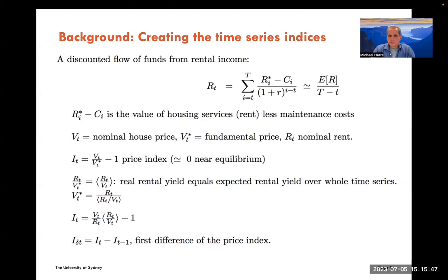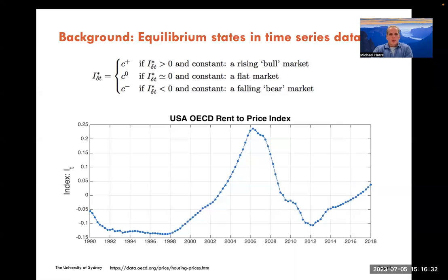This index I_T equals zero when the market is roughly in equilibrium. Following fairly standard market calculations, we ultimately obtain I_delta_T = I_T minus I_{T-1}, the first difference of the price index. I_T is an index of house prices — not in dollar terms but a non-denominational value measuring prices relative to some underlying fundamental price that must be inferred. If I_delta_T is greater than zero it's a rising market, about zero it's flat, and less than zero it's a falling market.